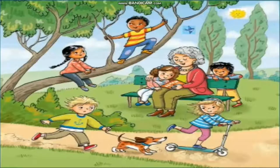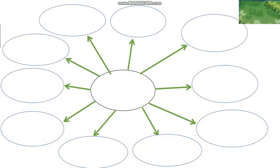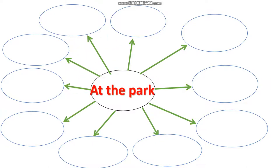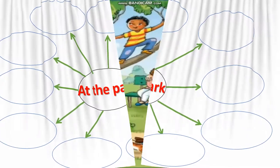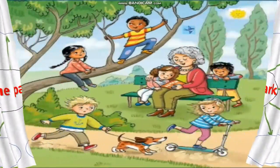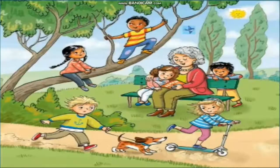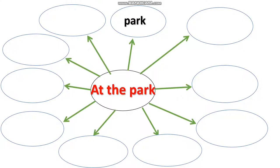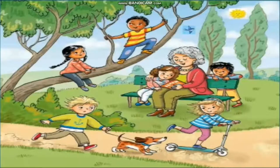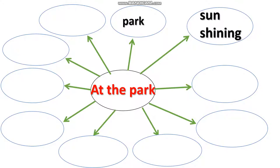Let us first choose a suitable title for the picture composition. I will write the title as 'At the Park.' What is the picture about? It is a scene of a park. Let us observe the picture again and note down the observation. The sun is shining brightly.